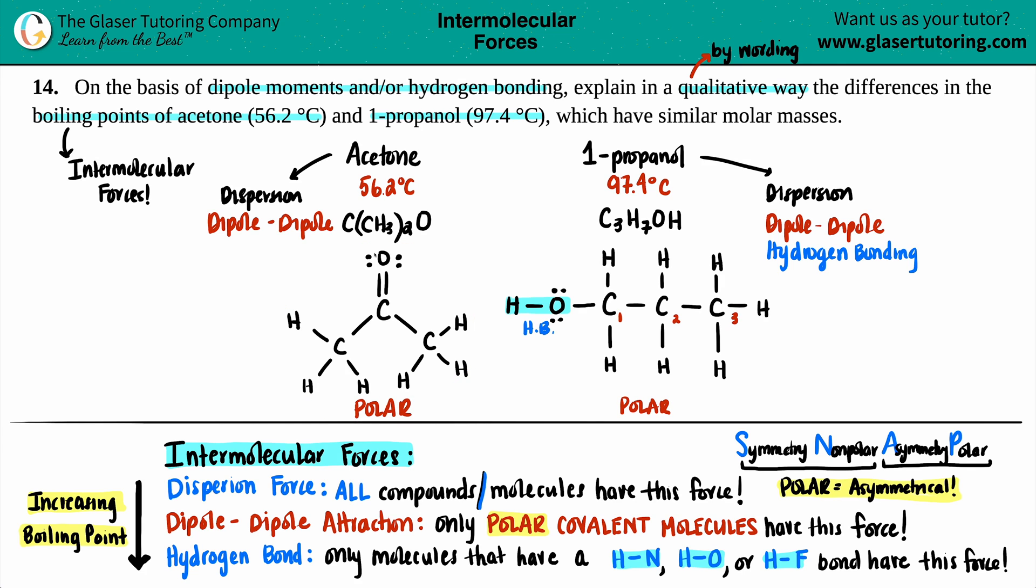So now it says, on the basis of dipole moments and or hydrogen bonding, explain the differences in boiling points. So, now that it makes sense that since this one has three IMFs, three intermolecular forces, dispersion, dipole, and hydrogen bond, and this one only has two intermolecular forces, the more you collect, the higher the boiling point. So, we could say, since one propanol has hydrogen bonding, it has a higher boiling point. And that's basically it.